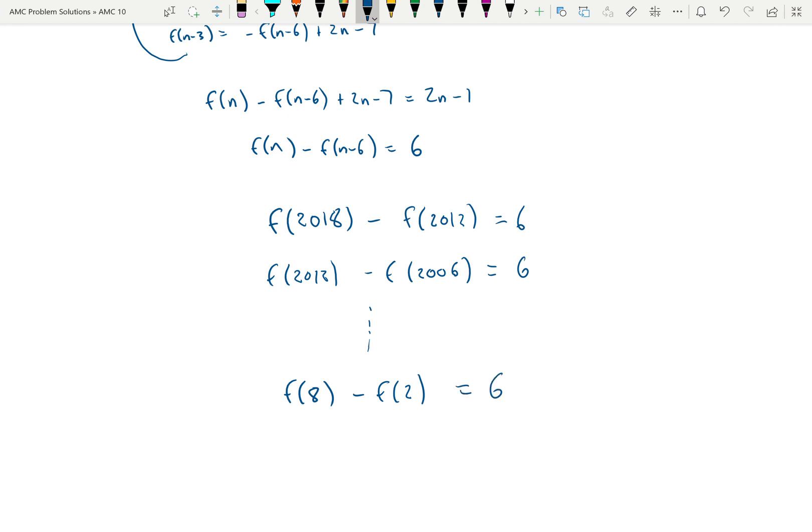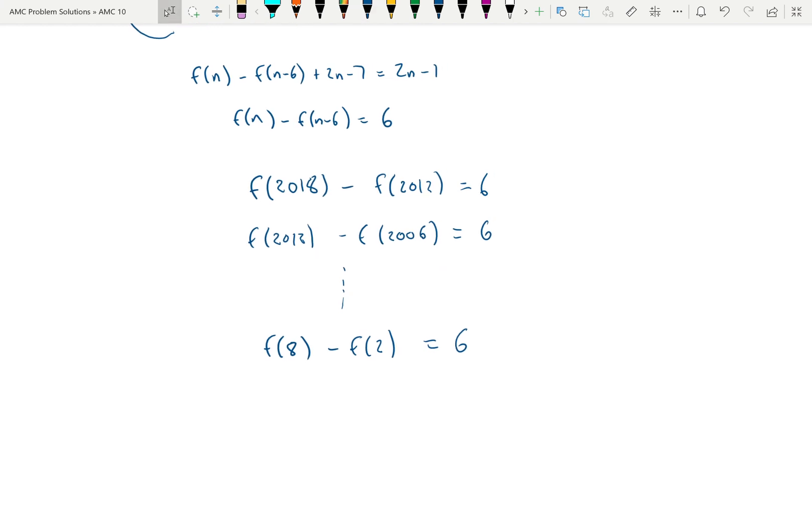So it's going to be true when we add up all of these equations. Notice that when we add up every equation, this negative f(12) cancels with the positive f(12). And so everything is going to cancel except for this negative f(2) and the positive f(2018). So it's going to be true that f(2018) - f(2) is equal to all of these 6s added up.